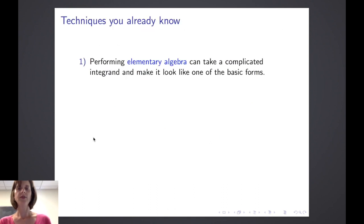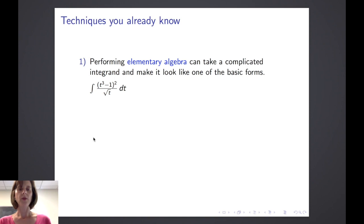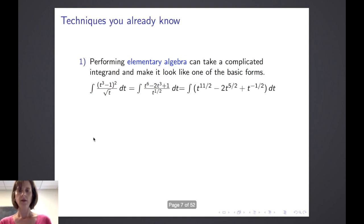You already know some techniques in order to transform a complicated integrand into something that meets one of those basic forms. One of the methods is just elementary algebra. For example, if we take the integral of the quantity t cubed minus 1, squared, divided by the square root of t, dt, we use algebra to expand that numerator and divide by t to the one-half. We now have an integral that is just a linear combination involving powers of t.